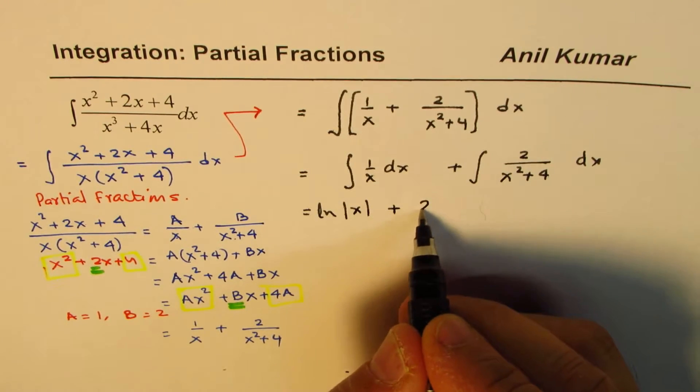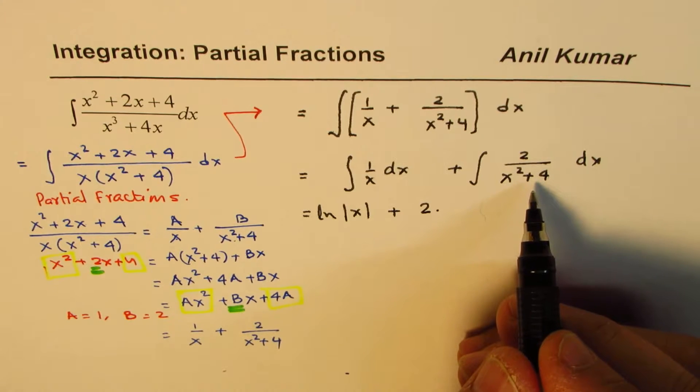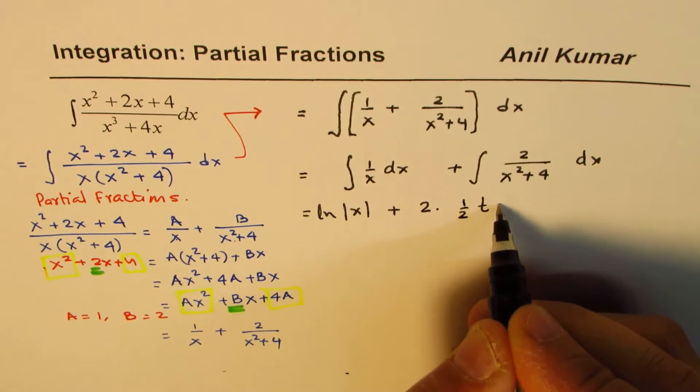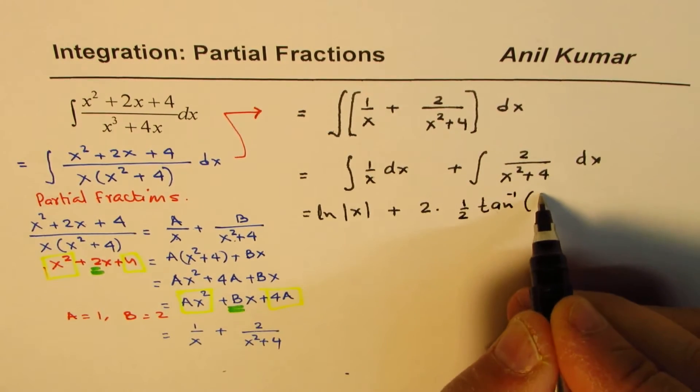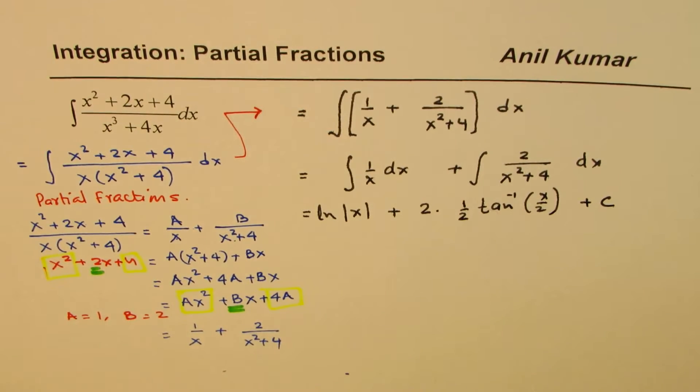2 comes outside, and it's 1 over x squared plus 4. So we can use the formula. So 1 over 2, it is equals to 1 over 2 tan inverse of x over 2, and then plus a constant C.